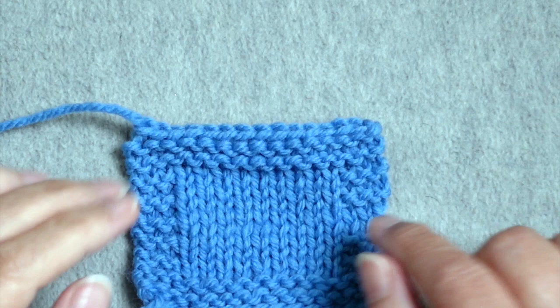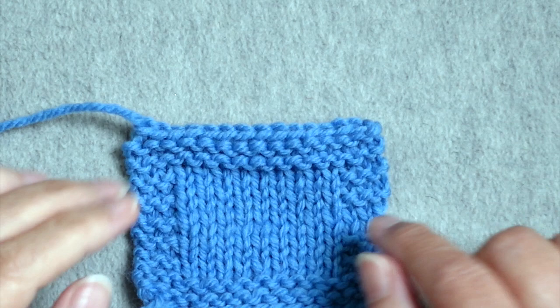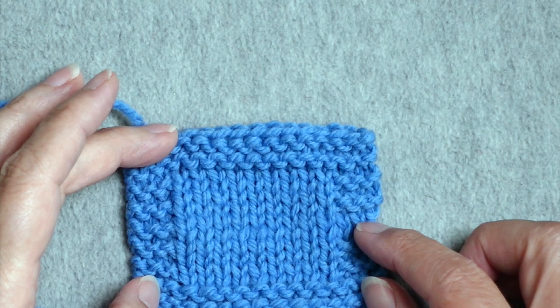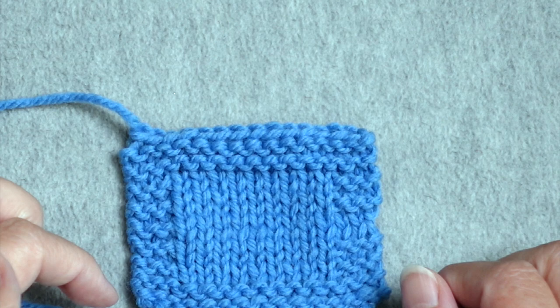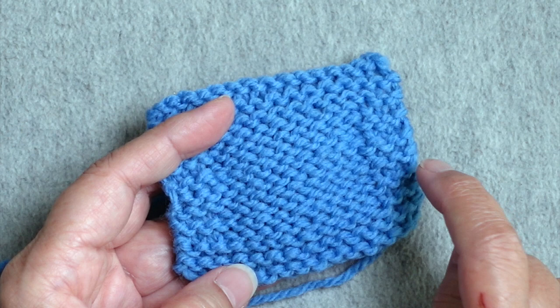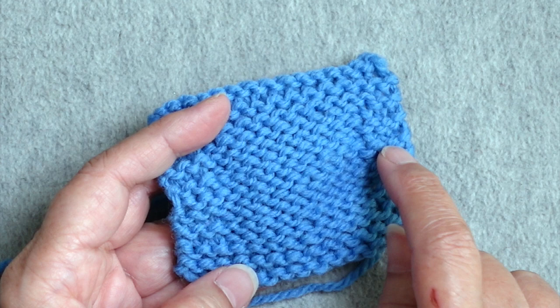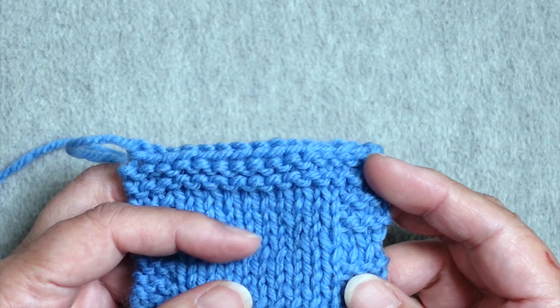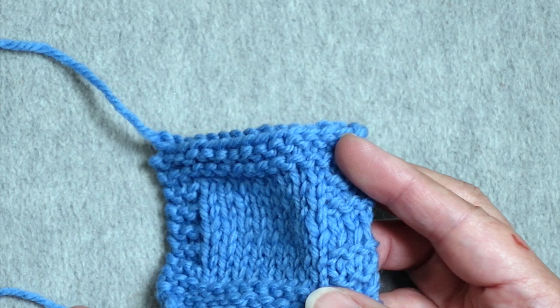In this little swatch, I have stockinette in the center and then I have garter stitch borders. I have an error along the edge, and it's a really common error — one that I make fairly frequently when working with garter stitch borders and a stockinette background. When I was working across a wrong side row, I did my three knit stitches for the garter stitch border, then switched to purl and worked the entire row in purl. I forgot to switch back to knits, so I was left with a gap in the garter stitch border where it's in stockinette instead.